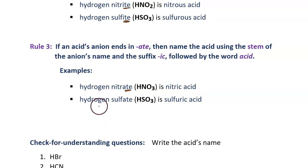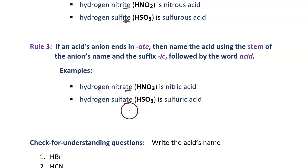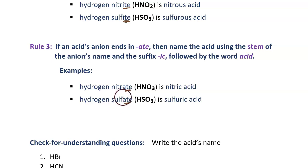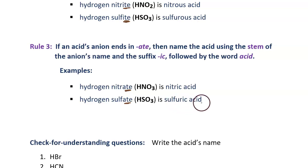Next example, hydrogen sulfate. This ends in "-ate", so it's rule three that applies. Take the beginning part of that word, the sulfur part, and end it with "-ic". It becomes sulfuric acid.